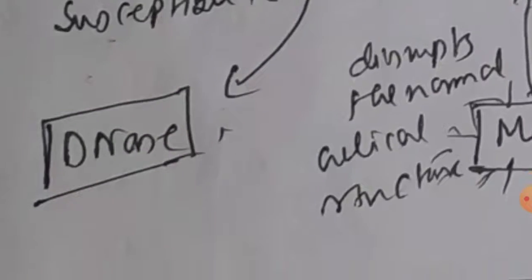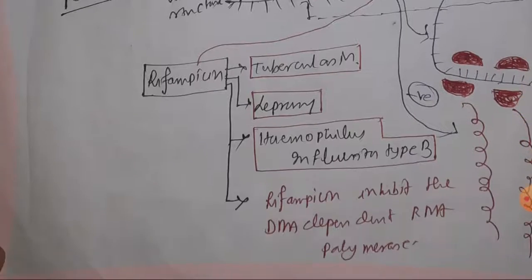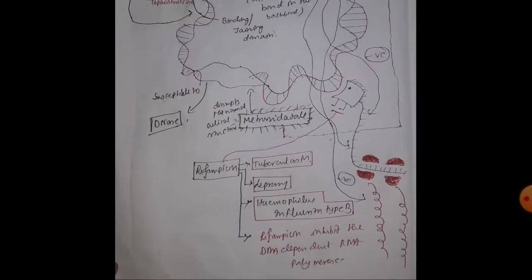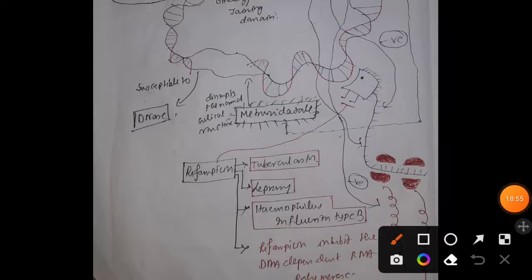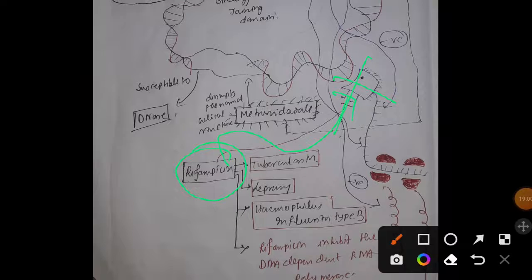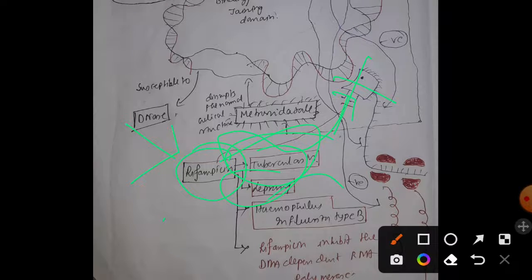The last drug to discuss is rifampicin. Rifampicin inhibits DNA-dependent RNA polymerase and prevents RNA synthesis — making it a hardcore RNA synthesis inhibitor. It is useful for treating tuberculosis, leprosy, and Haemophilus influenzae type B infections.